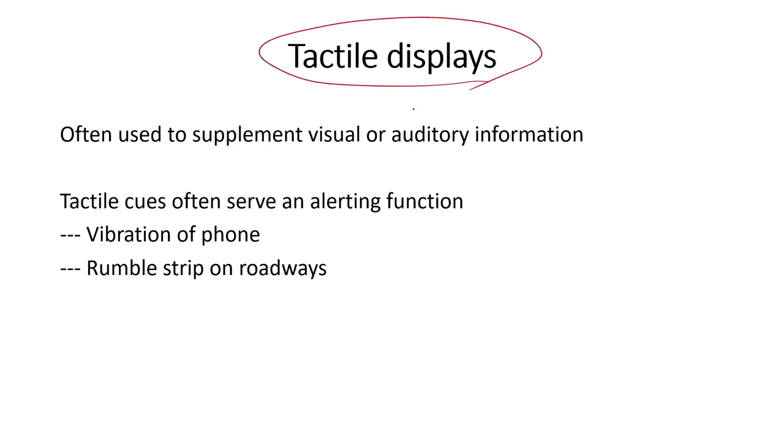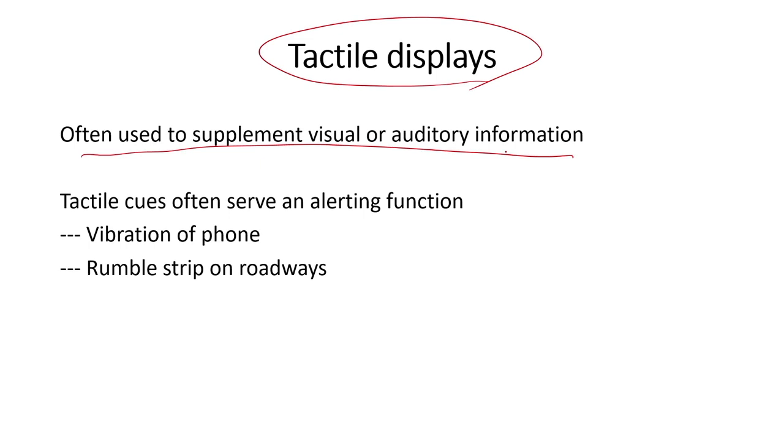We will now very quickly look at tactile displays, which have to do with the touch sensation. Tactile displays are always used as a supplement to visual and auditory information — the same as the vibration of your phone, which is additional information that a call is coming while you look at the phone to understand what is happening. This feedback from the phone is a tactile display. The one situation in which a tactile display works alone is Braille, where people with no eyesight can read by touching the Braille surface.